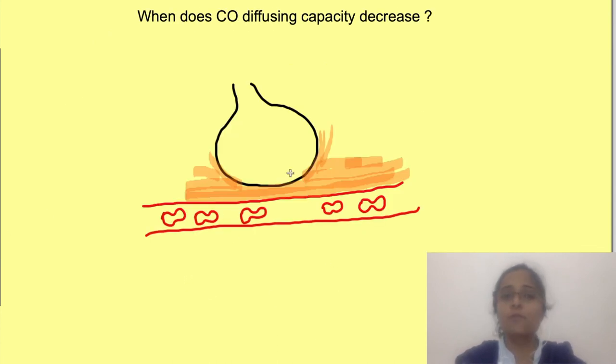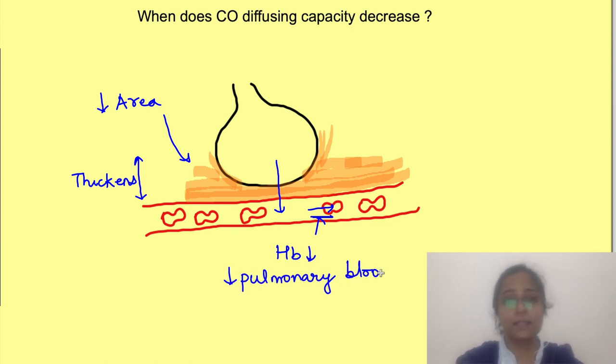But when does this diffusion capacity of lungs for gases decrease? Can you predict it from the concepts we have discussed till now? Basically you have to think about those two parameters i.e diffusion across membrane and diffusion capacity of blood. So it will decrease in case respiratory membrane thickens like in case of pulmonary fibrosis or if cross sectional area of respiratory membrane decreases as in emphysema. But you should remember that it also depends on diffusion capacity of blood that is on blood volume and hemoglobin as we have discussed earlier. So if these are less then also diffusion capacity will be less. So you have to interpret the findings with a bit of caution.